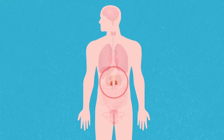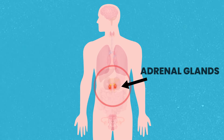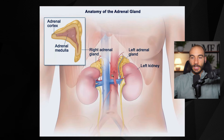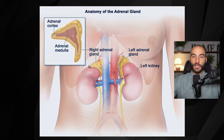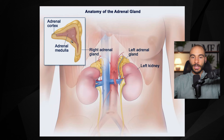First things first, in order to understand why this ratio is so important, you need to understand the adrenal gland. I'm going to pull up a graphic here. The adrenal gland is the gland that sits right above the kidneys, and essentially its job is to actually manage your stress response. There are two major portions of the adrenal gland.